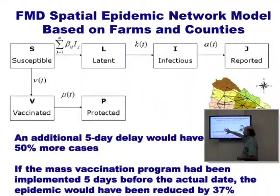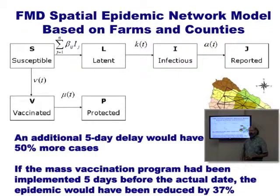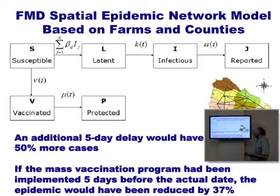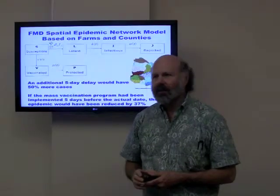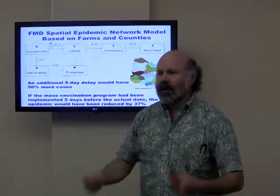We were able to reproduce the epidemic using a susceptible-latent-infectious-reported model. When cows are latent, they may still travel to other farms and show symptoms when they arrive. We can vaccinate them and they enter the protected class. We reproduced the epidemic and found — just like Matt Keeling in the UK — it was the delay time. If they had delayed five more days in the vaccination policy, they would have had 50% more cases. But if they'd acted five days earlier, they would have saved over a third of the cattle that got infected.